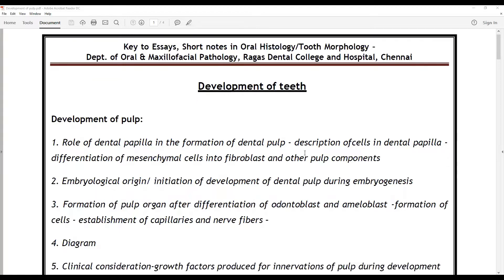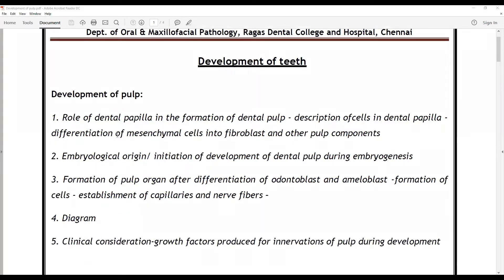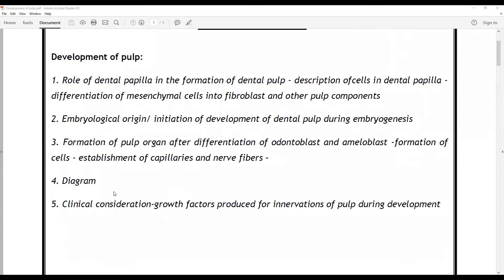We'll cover the description of cells in dental papilla, how the mesenchymal cells differentiate into fibroblasts and other pulp components, embryological origin, initiation of development of dental pulp during embryogenesis, formation of pulp organ after differentiation of odontoblast and ameloblast, and establishment of capillaries and nerve fibers, the diagrams, and clinical considerations including growth factors produced for innervation of pulp during development.